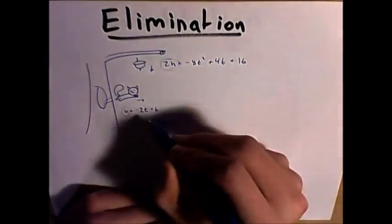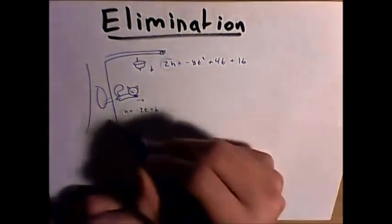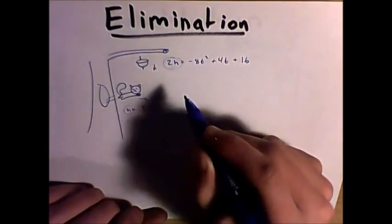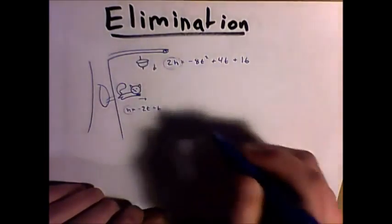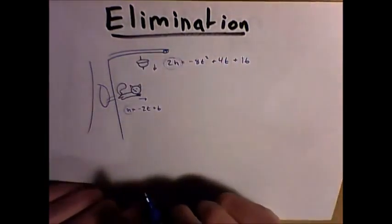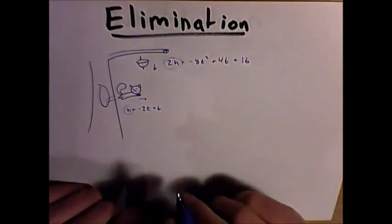Now what we want to do is we want to subtract this equation from that equation so that we can eliminate h. Now, to do this, we need to have it so that when our h's subtract from each other, they equal zero. This means that we need to have these h's have the same coefficient. But how do we go about doing that?